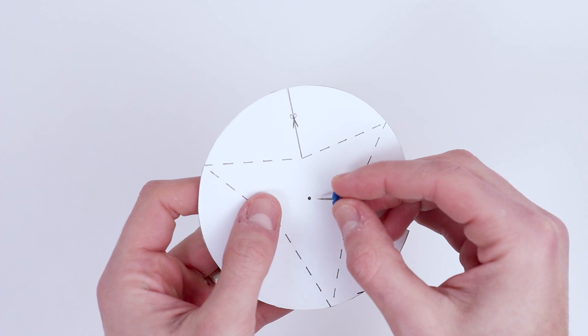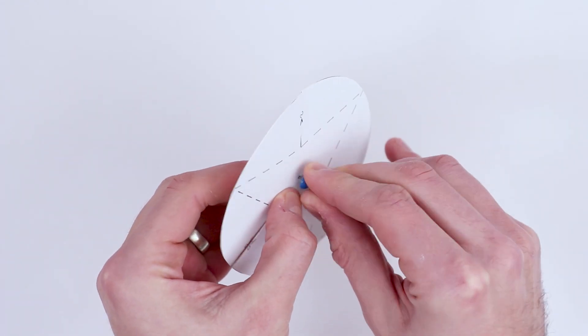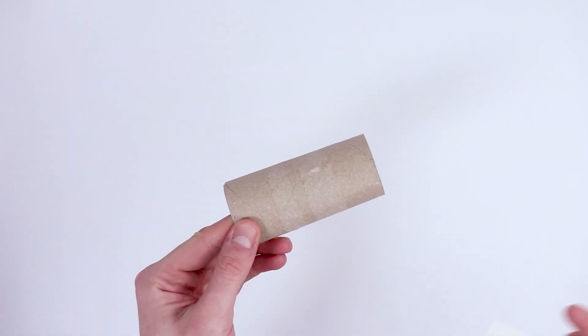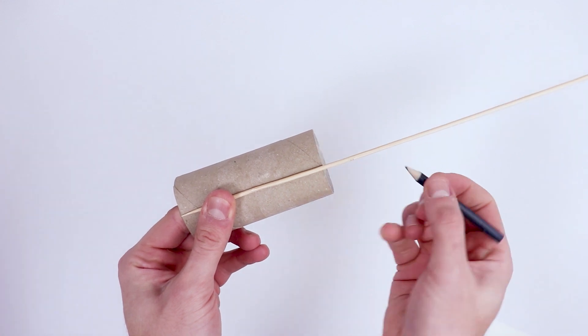We'll now attach the fan blade to its shaft. Firstly, use a drawing pin to make a hole in the center of the circle. Then take a kebab stick and make a mark on it to measure it a few centimeters longer than a toilet roll.